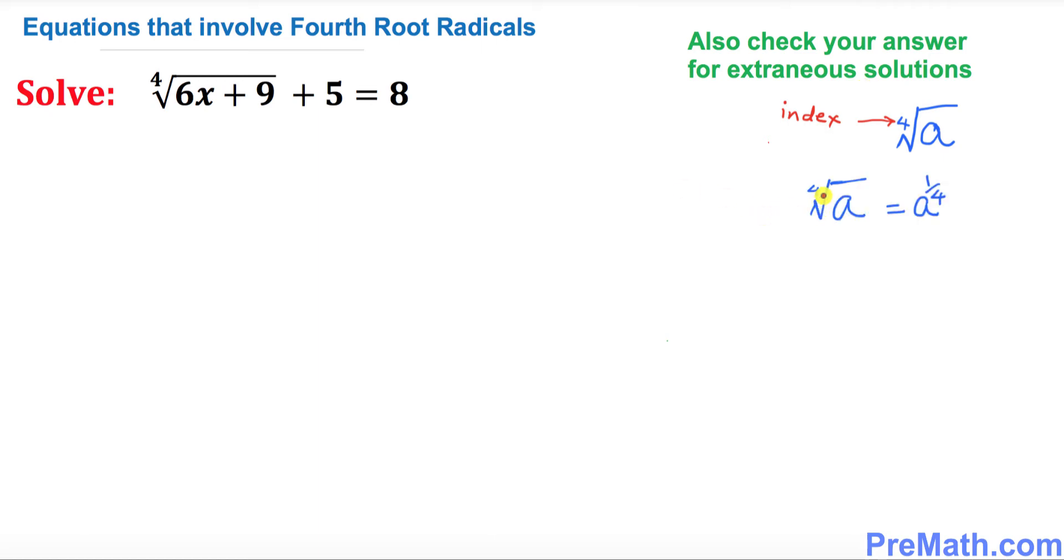One more thing I'm going to tell you: the left hand side is a fourth root of a, and it is the same as writing a to the power one over four. The left hand side is in radical form and the right hand side is in exponential form.